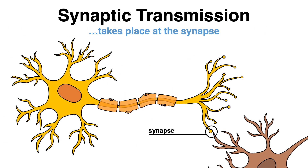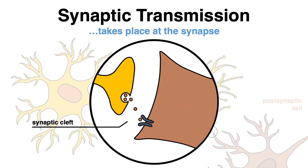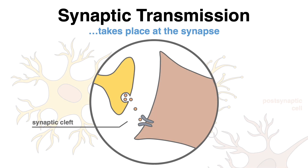The synapse is where the sending neuron, also called the presynaptic cell, comes really close to the neuron receiving the information, known as the postsynaptic cell. As these two cells do not touch each other, this small gap in between is referred to as the synaptic cleft. This is where the magic happens.